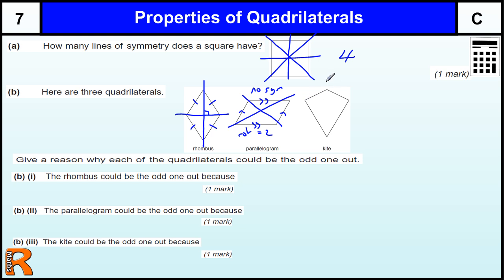The kite, we have one line of symmetry. We have diagonals cross at right angles. We have no rotational symmetry.